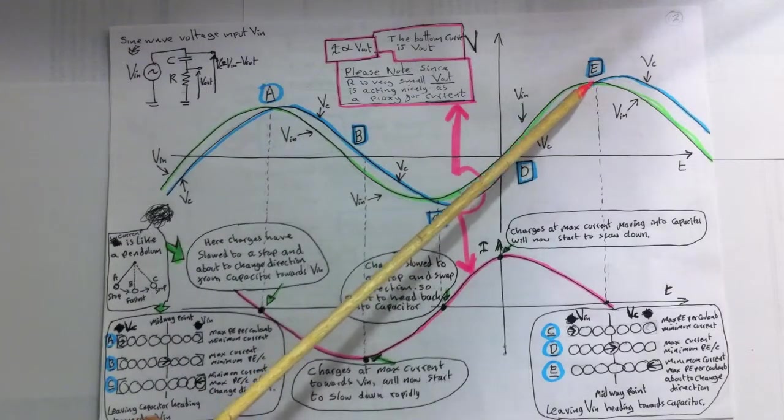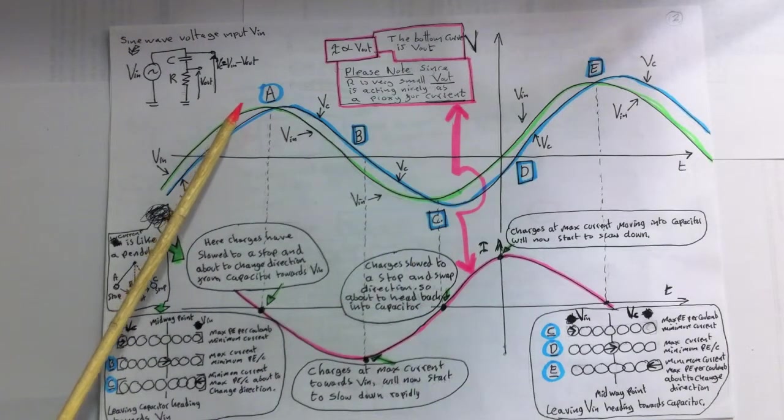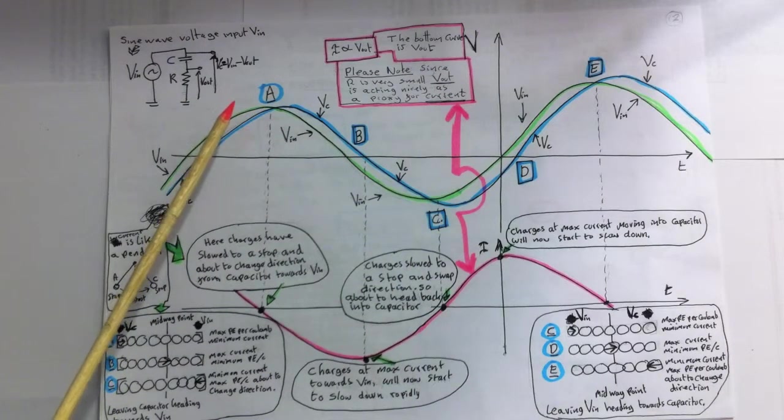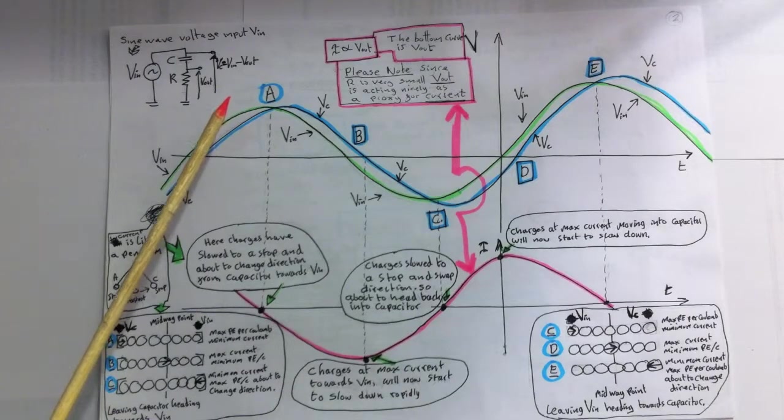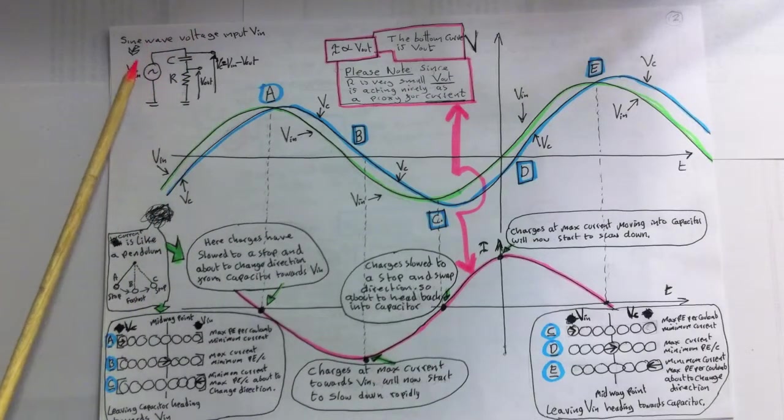At E, we have completed one full cycle, and now, in effect, we're back at A. Both Vin and Vc here are equal. So charges have now stopped flowing and about to change direction, moving back out of the capacitor towards Vin. So now they're going to start coming back out of the capacitor towards Vin.